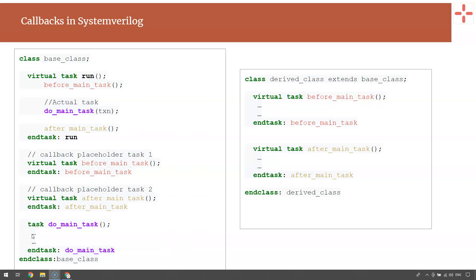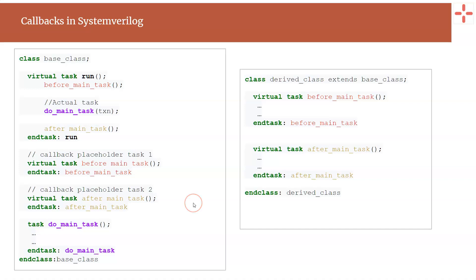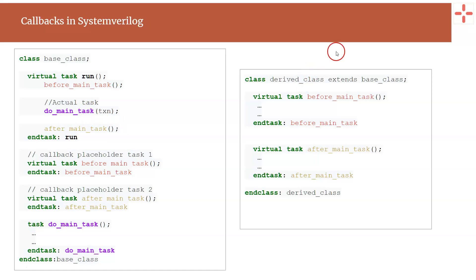If you watch this closely, you will understand how callbacks are achieved in SystemVerilog. If you use an object of the base class, these callback tasks will be empty and only the main task functionality will execute. But when you want to modify the behavior slightly, you define a derived class extending from the base class and just write the code for the callback functions or tasks.